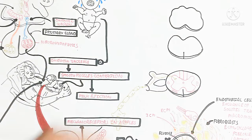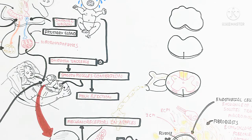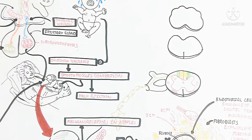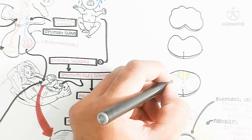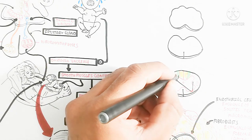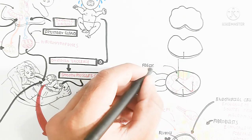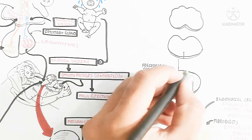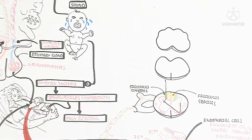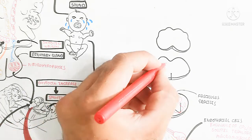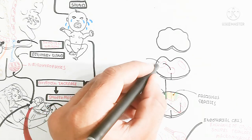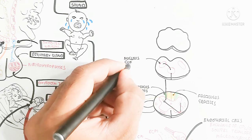From the gray matter, the signal moves into the fasciculus cuneatus, which carries the ascending first-order neuron signal up to the medulla. There, the nucleus cuneatus is present, and the second-order neuron leads the nerve impulse toward the midline of the medulla.